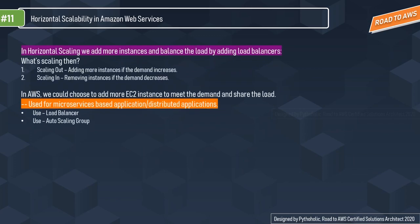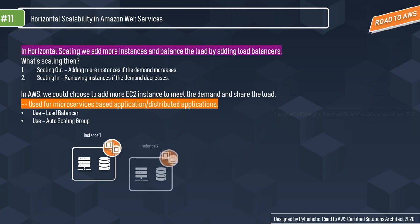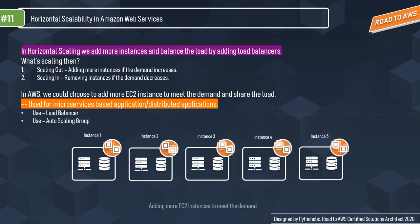Horizontal scaling involves adding multiple systems to share load across machines or instances. It can also be described as changing the number of nodes in a computing system without changing the size of any individual node. We increase the number of instances and balance the load by distributing them — helpful for distributed applications like EC2. In AWS, adding instances is called scaling out, and decreasing is called scaling in.